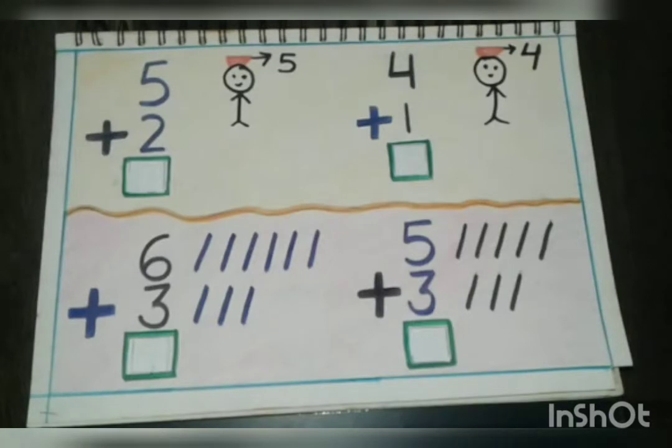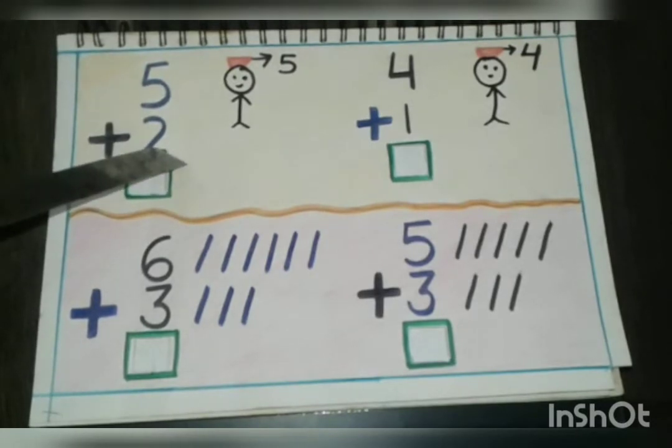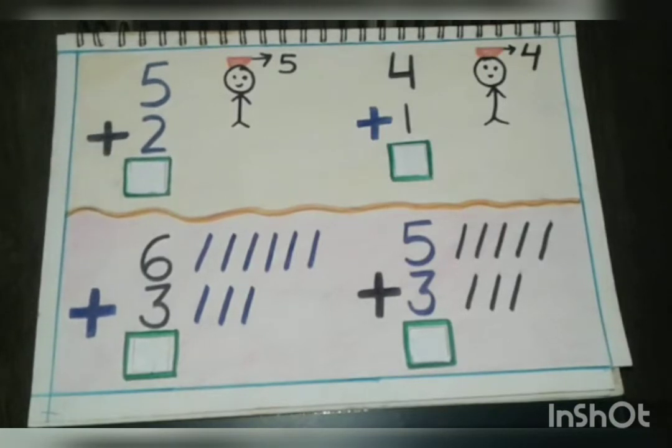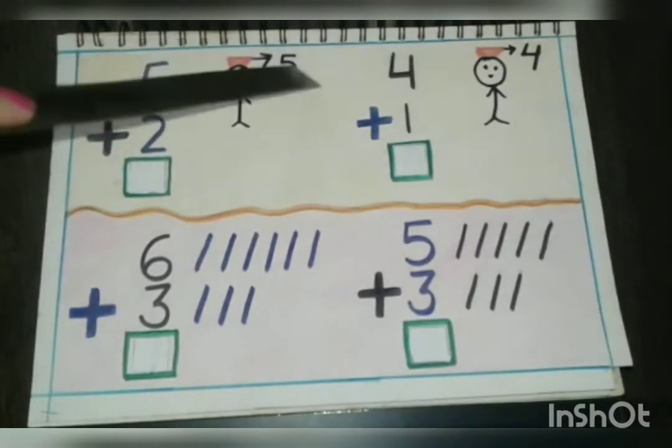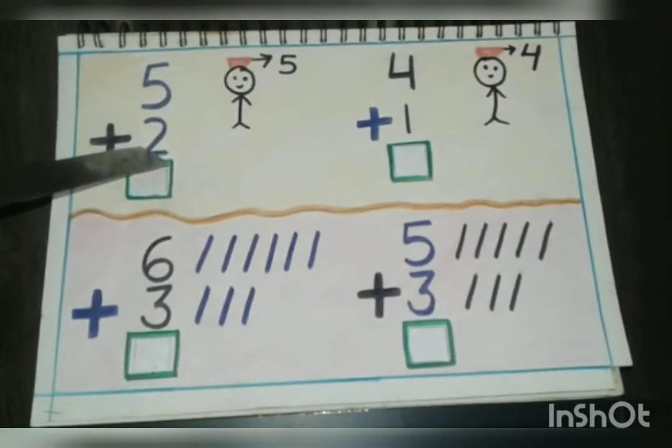Now let's understand how we do the vertical addition. So let's see the first example, five plus two. We will add these two numbers by head and finger method. Out of these two numbers, which is a bigger number? Five is a bigger number. So we will keep the bigger number in our head and how many fingers we will open?